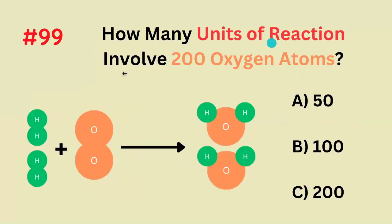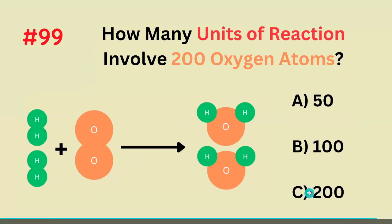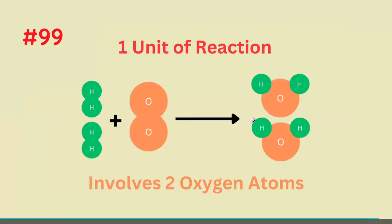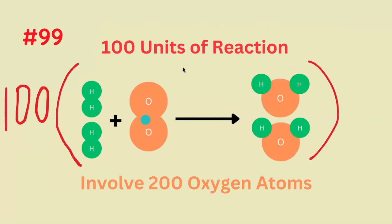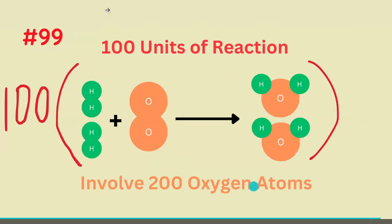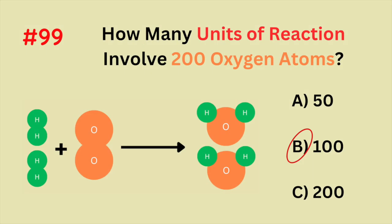How many units of reaction involve 200 oxygen atoms? We know that 1 unit of reaction involves 2 oxygen atoms, and these 2 rearrange to become the products. So if we have 100 of these reactions happening, we would have 200 oxygen atoms. The correct answer is 100 units of reaction.